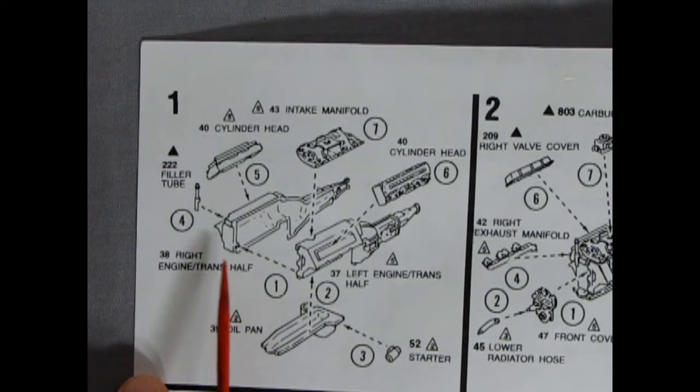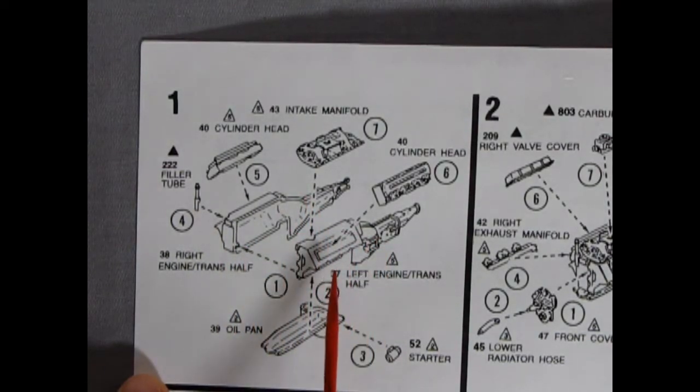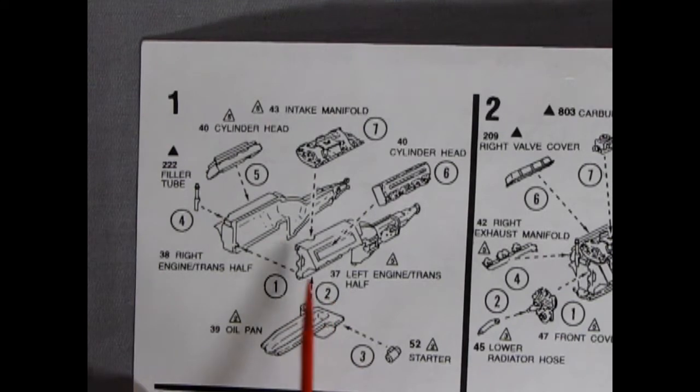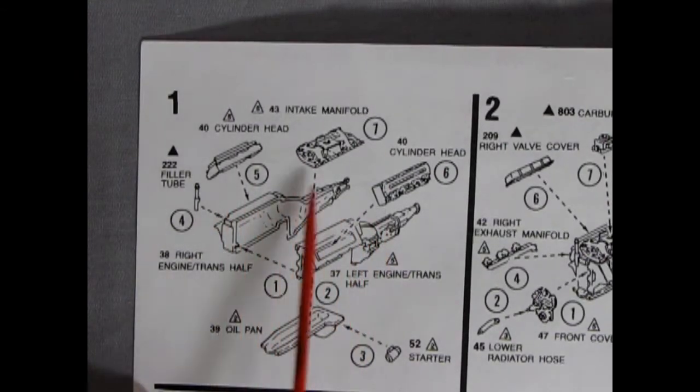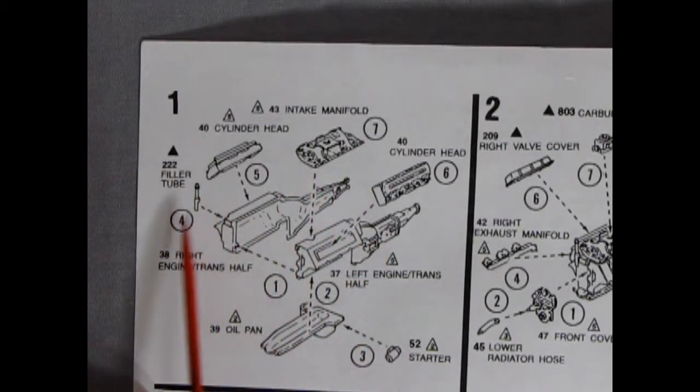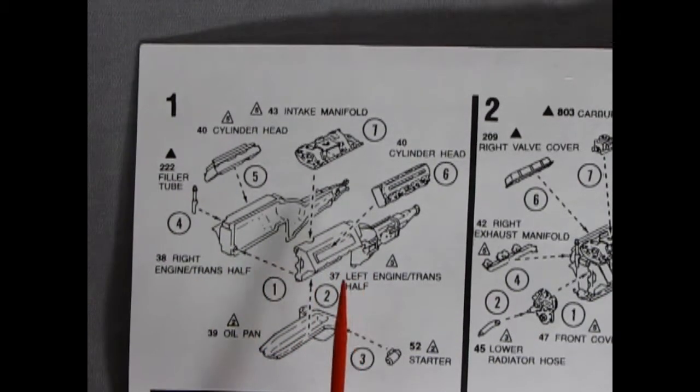Okay, here's our engine block. So, we've got, of course, the left and right-hand side with the transmission. It's very popular in all these kits in the 67 era, if you look in the other videos of mine. So, we've got the oil pan, the starter, the cylinder heads, the intake manifold, and the filler tube going right in the front. Correct for the Oldsmobile engine of this era.